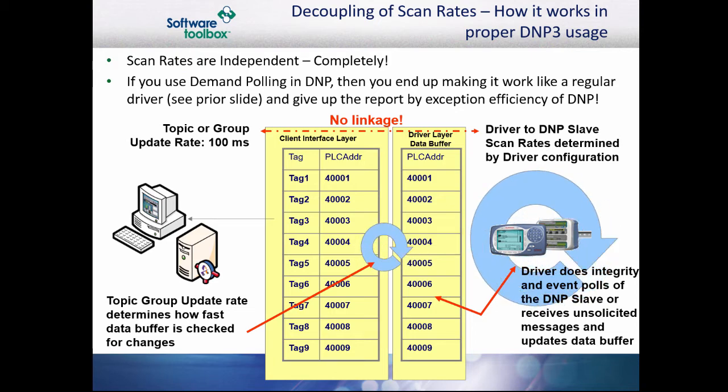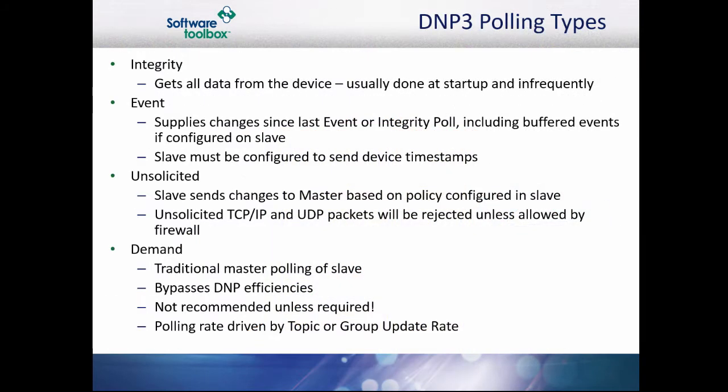There are four types of DNP3 communications. An integrity pull requests all data from the slave regardless of data changes and what the client is asking for. This is usually done at startup and then performed very infrequently after startup. Event pulls request all data changes since the last event or integrity pull, regardless of what the client is pulling. If the slave is configured to send timestamps, the timestamps for these events will come from the device.